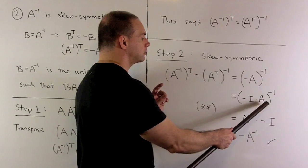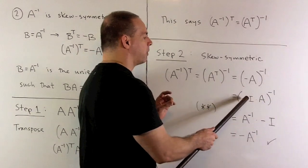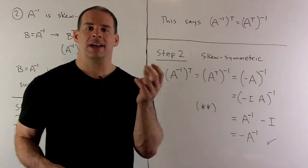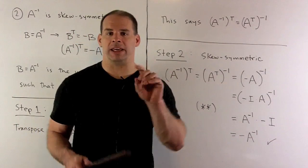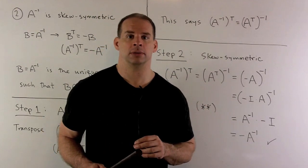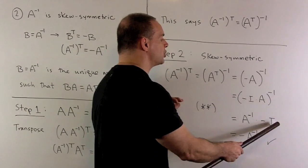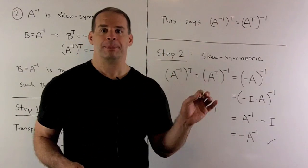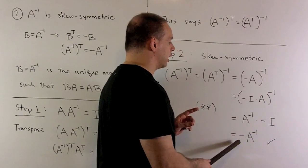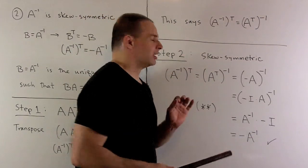Then we can factor this as minus the identity matrix times A, all inverse. If we take the inverse of a product of two matrices — same as with the transpose — we reverse the order and take the inverse of each. So we get A inverse times minus I inverse. Minus I times itself gives the identity, so it's self-inverse and we can drop it, leaving just a minus sign out front. So A inverse transpose equals minus A inverse — that's our result.